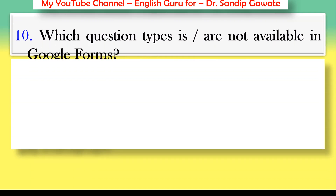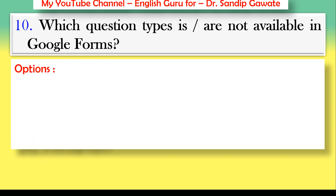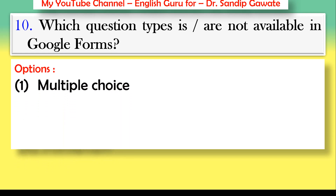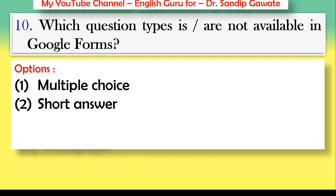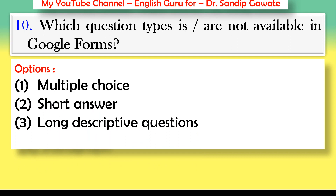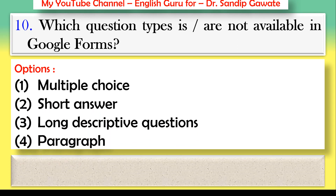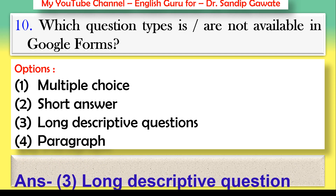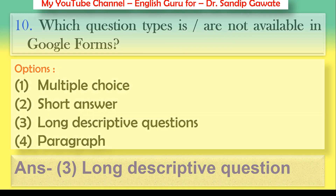Question 10: Which question type is not available in Google Forms? Options: multiple choice, short answer, long descriptive questions, or paragraph. The correct answer is option number three — long descriptive questions.